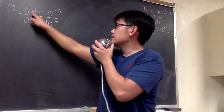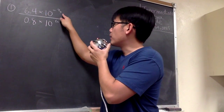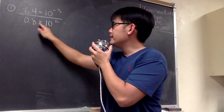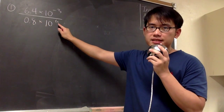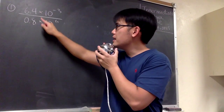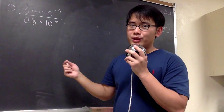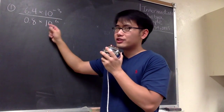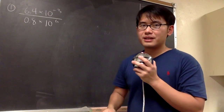Number 1, we have 6.4 times 10 to the negative 3 power over 0.8 times 10 to the positive 6 power. We see that we have a multiplication on the top and also on the bottom. So what we can do is break down this fraction into two fractions and then multiply them together.